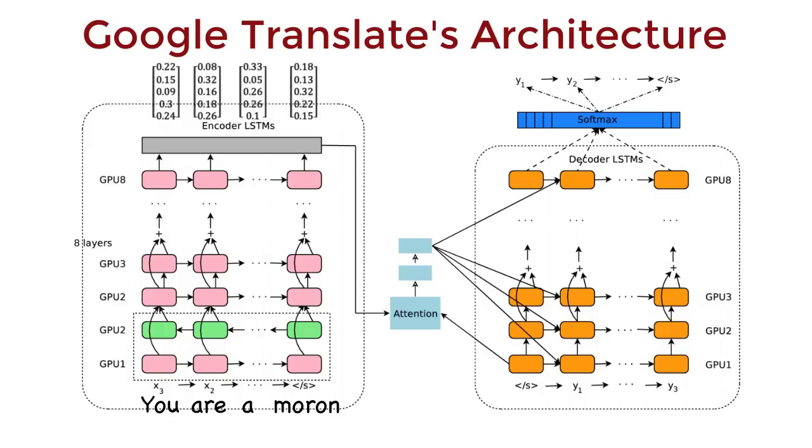These words are then just passed into an attention mechanism, and this determines the English words to focus on while generating some French word. This data is passed to the decoder, which generates the translated French sentence one word at a time.